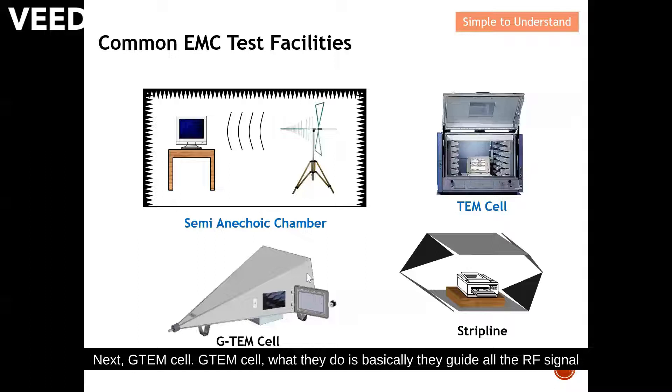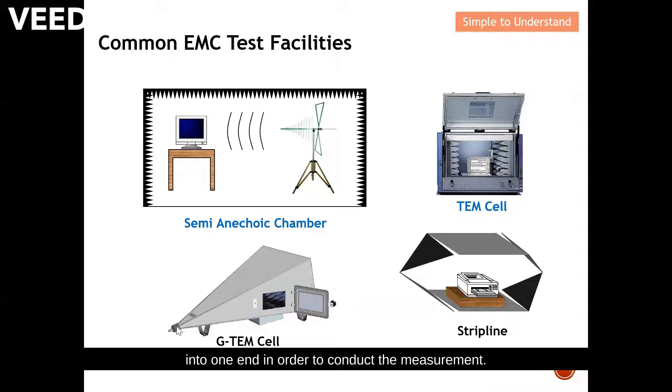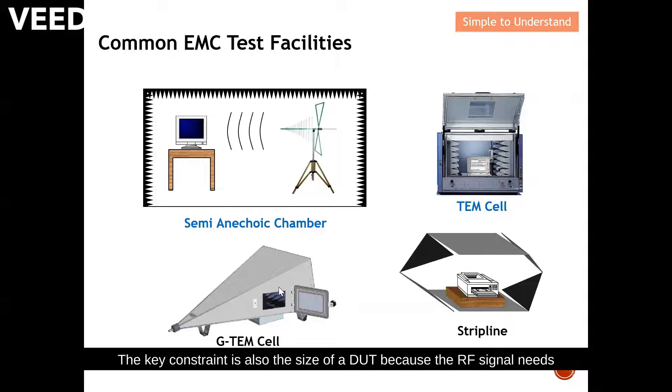Next, GTEM cell. What they do is basically they guide all the RF signal into one end in order to conduct the measurement. The key constraint is also the size of the DUT because the RF signal needs to be guided all the way to the tip of this GTEM cell. Hence, the size of the DUT cannot be large.